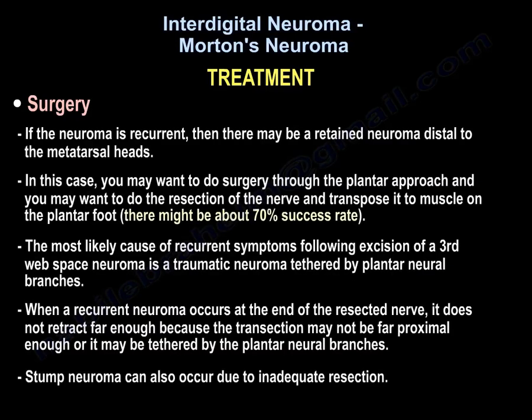If the neuroma is recurrent, there may be a retained neuroma distal to the metatarsal heads. In this case, surgery through the plantar approach may be preferred, with resection of the nerve and transposition into muscle on the plantar foot. There is approximately a 70% success rate. The most likely cause of recurrent symptoms following excision of a third web space neuroma is a traumatic neuroma tethered by plantar neural branches, occurring when the transection is not far enough proximal, or the stump is tethered. Stump neuroma may occur due to inadequate resection.